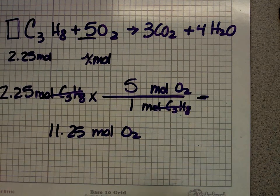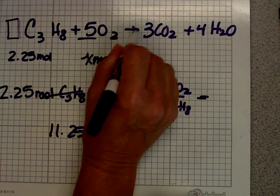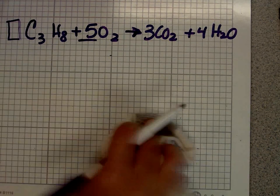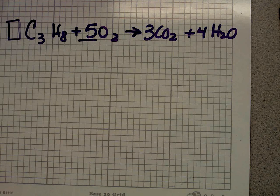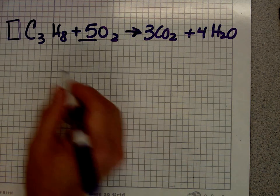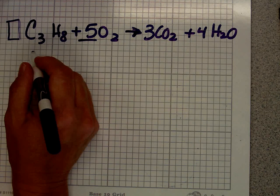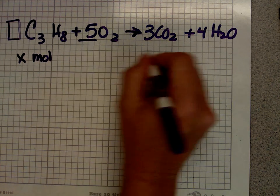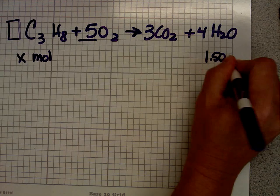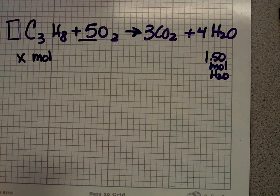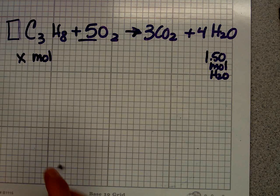With these types of problems, it doesn't matter whether you're talking about things on the same side of the reaction or not. Let me give you an example. How many moles of C3H8, so x moles, we don't know how many of these we need, are required to produce 1.5 moles of water? Notice they're on different sides of the equation. You do the problem exactly the same way.